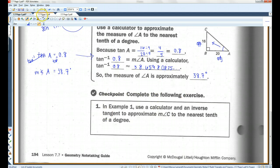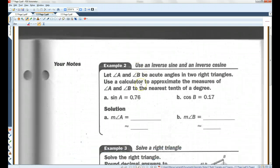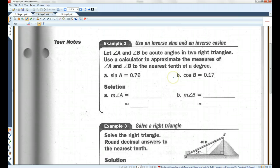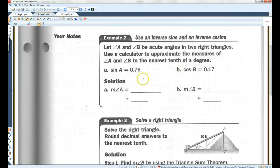You guys try this one. Let's go on to page 2. Let angle A and angle B be acute angles in two right triangles. Use a calculator to approximate the measures of angle A and angle B to the nearest tenth of a degree. So, sine of A, the way you get rid of sine is with inverse sine. That cancels that out. So the measure of angle A is the inverse sine of 0.76.